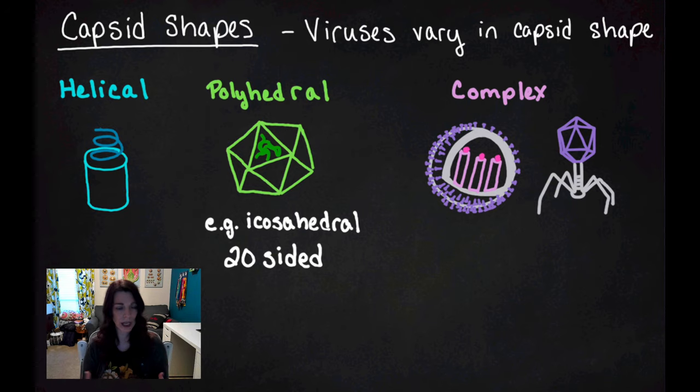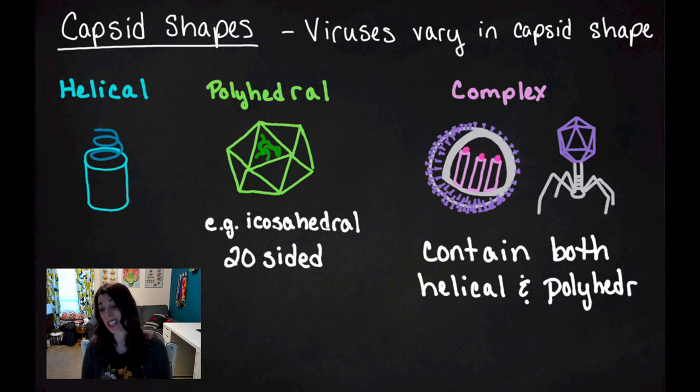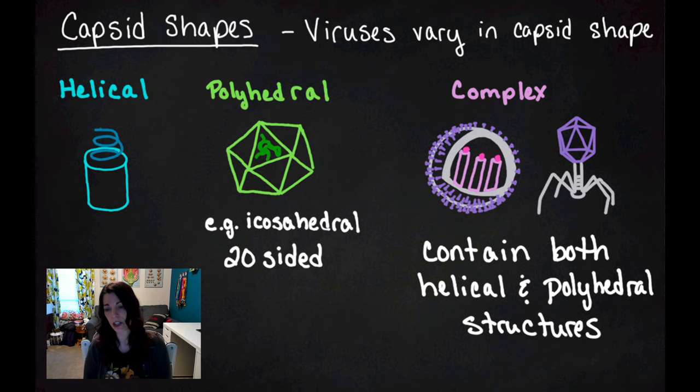As we get into talking about how viruses reproduce, we'll get into the specifics of what types of organisms they affect. But you need to know that each of these viruses are very specific to certain cell types. Both of these complex viruses contain a helical and a polyhedral structure, and so it just makes it easier for us to talk about the viruses.